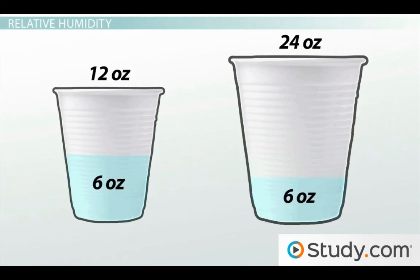There are six ounces of fluid in the 12 ounce cup, so six divided by 12 times 100 equals 50%. There are six ounces of water in the larger cup as well, but this cup can hold a total of 24 ounces.